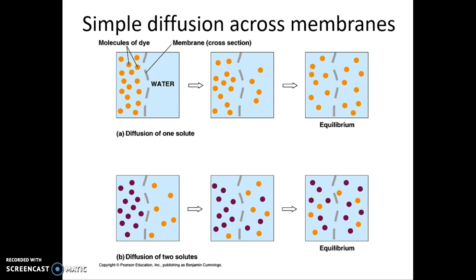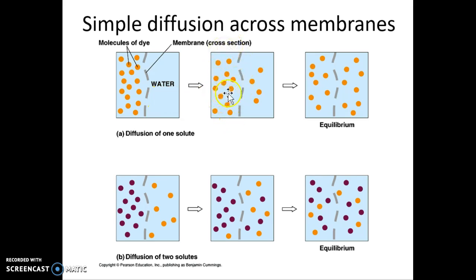Here we can see simple diffusion across a membrane. There's a membrane with all these molecules on the left that start to move across. Since there are no molecules on the right at first, all diffusion is to the right. But once some molecules have crossed, there are molecules that can move both ways — more can still move right, so we expect more molecules as a whole to move to the right.